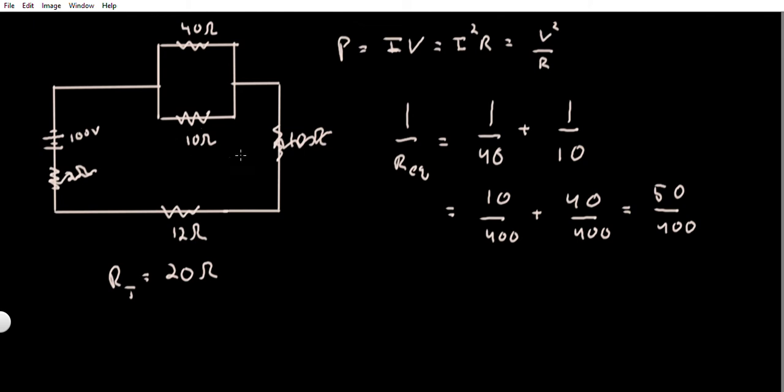And knowing that, I can get the total current using Ohm's law: V equals IR, so V divided by R equals I. The V here is 100 divided by 20 - 100 volts by 20 ohms gives me 5 amps throughout the entire circuit.